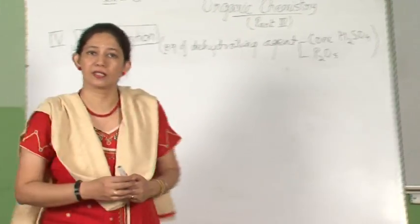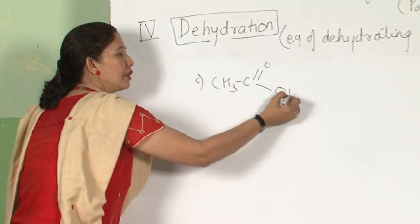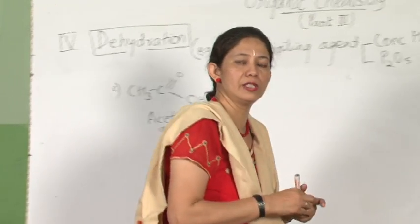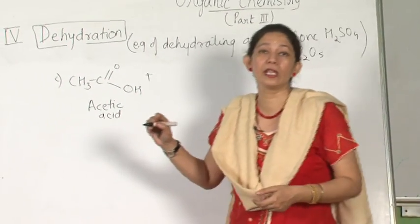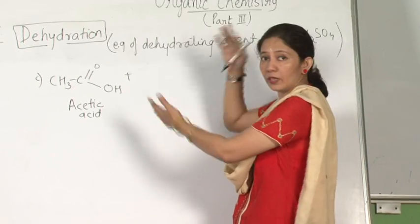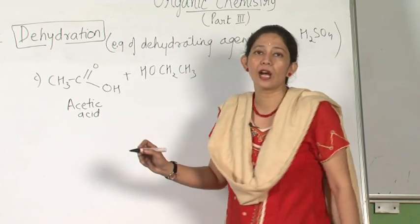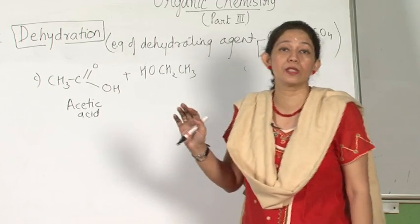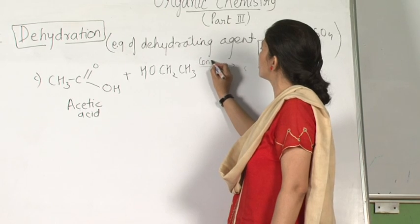When a carboxylic acid reacts — I am taking the example of the acid present in vinegar, acetic acid. I can use either the IUPAC name or the common name. When a carboxylic acid reacts with an alcohol — let me take ethanol — instead of writing CH3CH2OH in the usual way, let me write it in the opposite way: CH3CH2OH. I am heating this reaction with concentrated sulfuric acid.